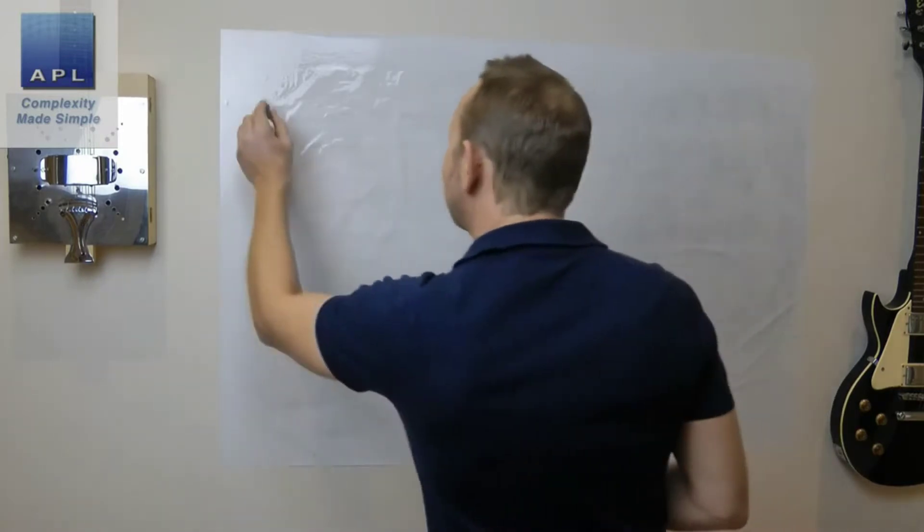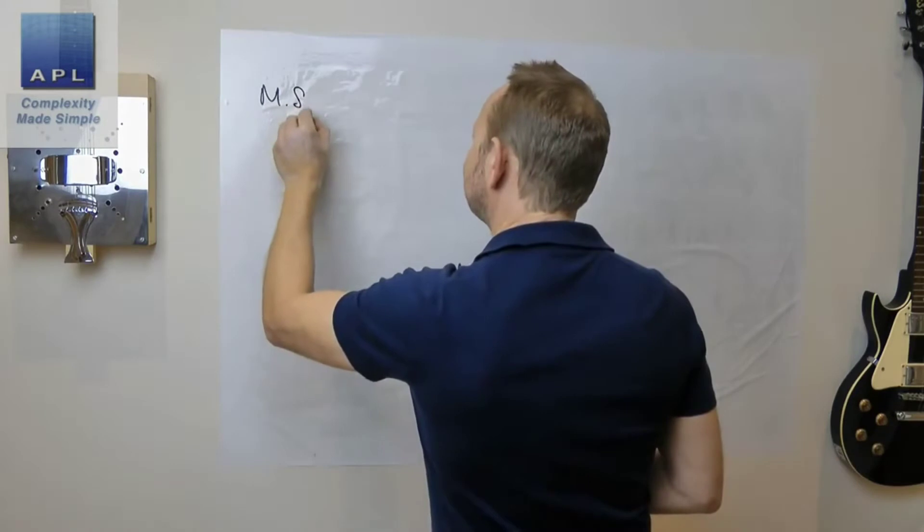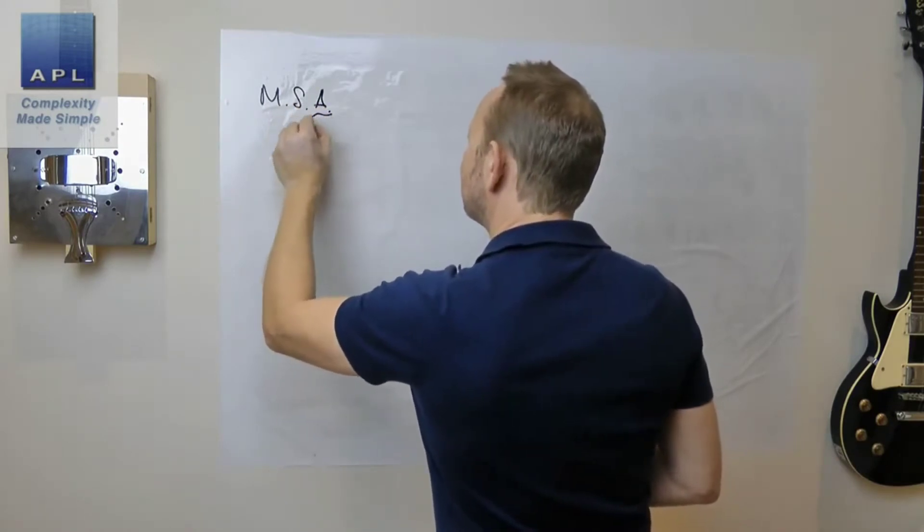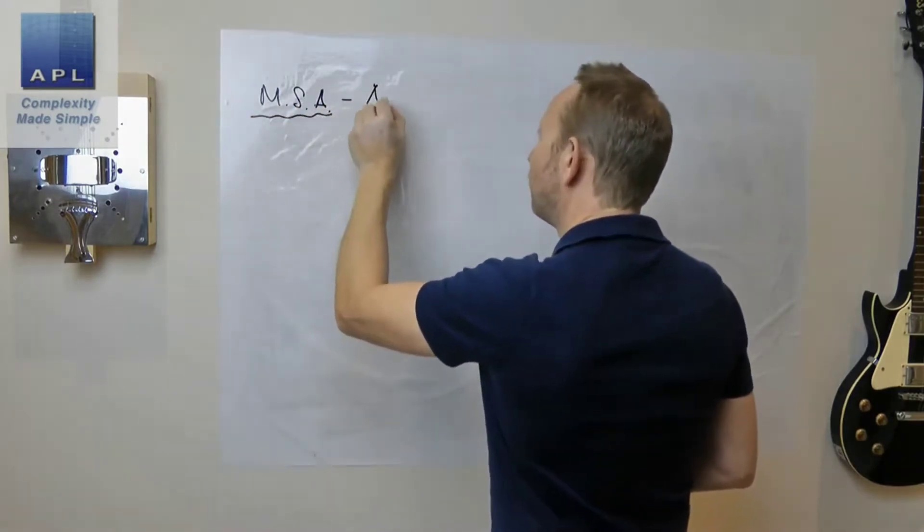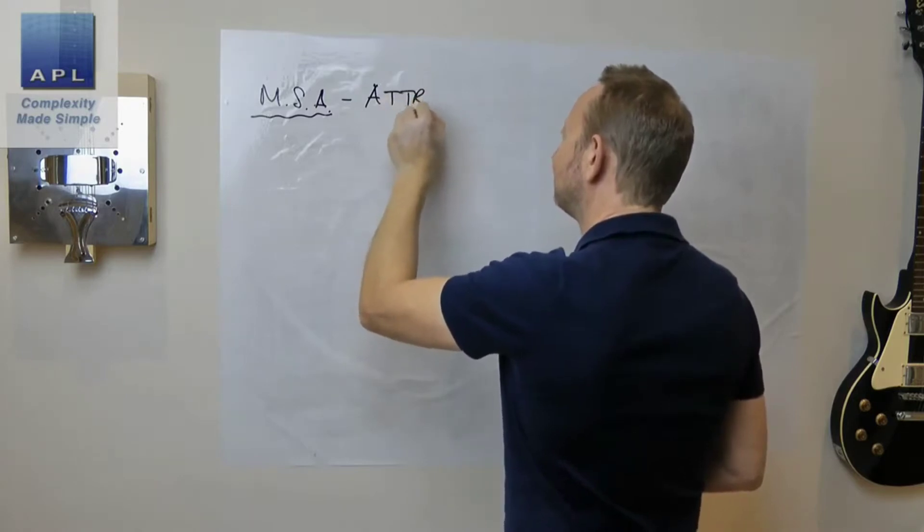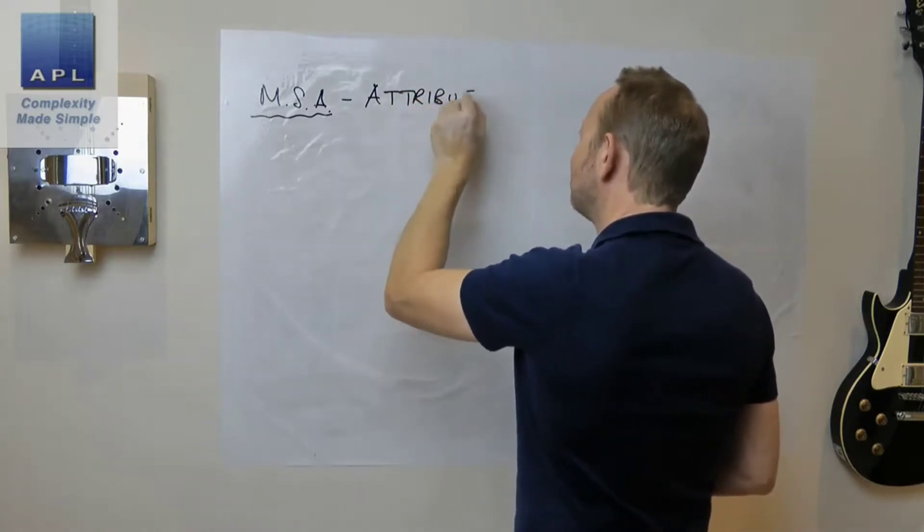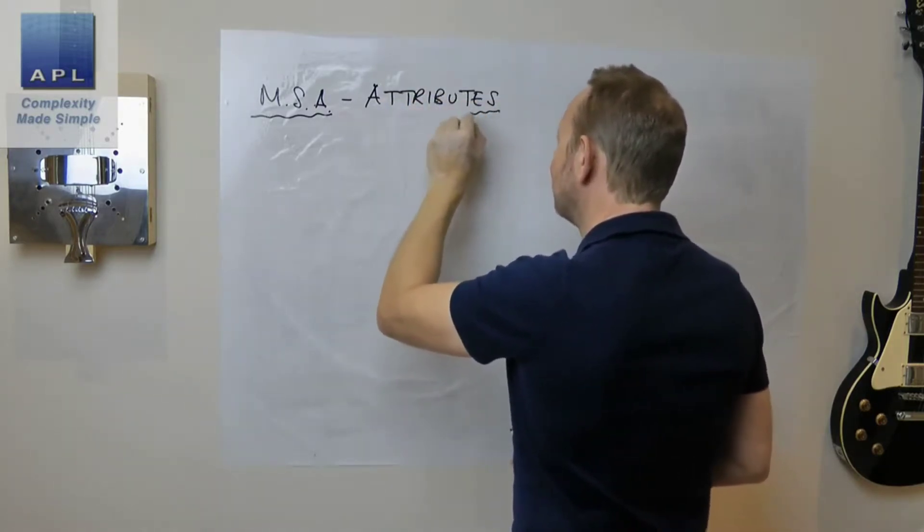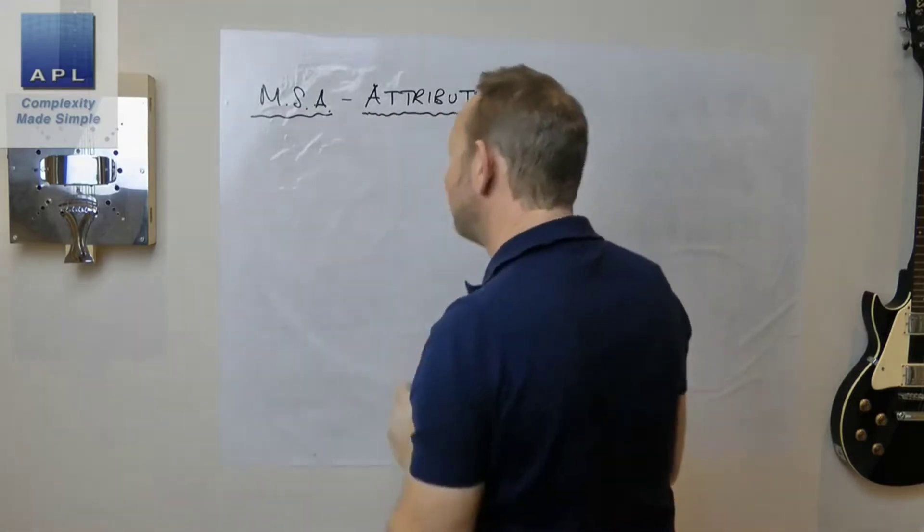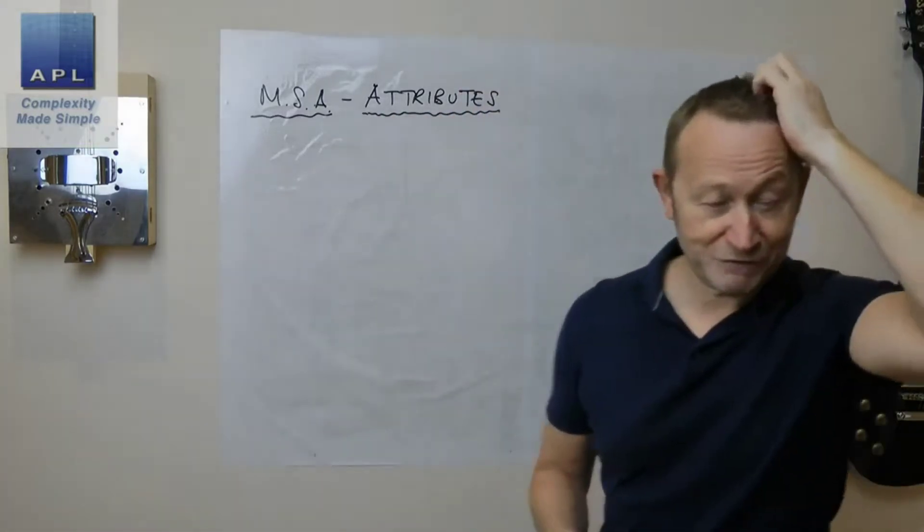Let's take a look at MSA for attributes, pass and fail. Often it's some kind of cosmetic inspection, but it doesn't have to be, it often is.